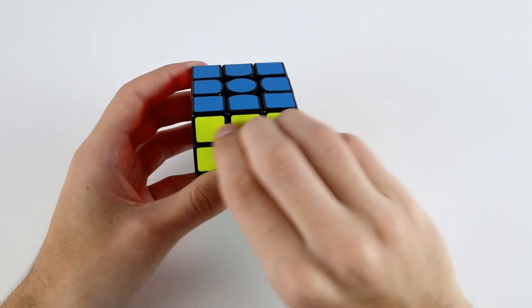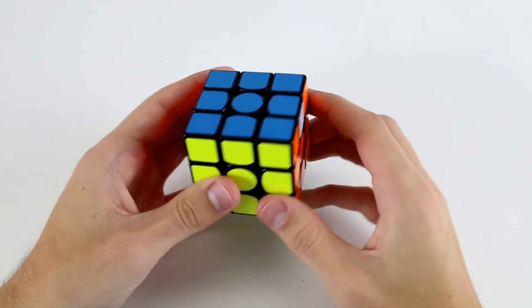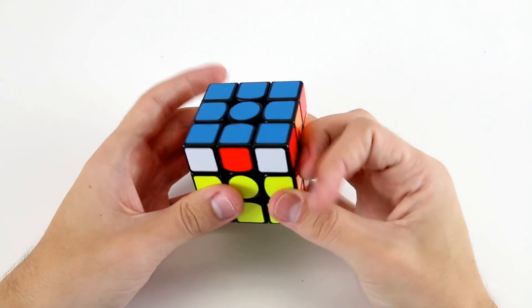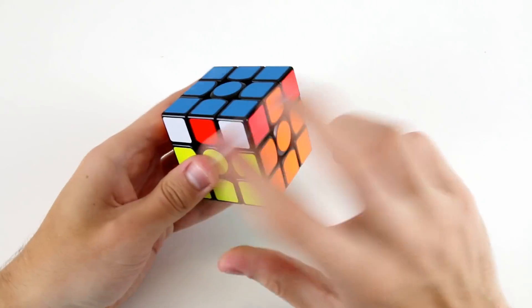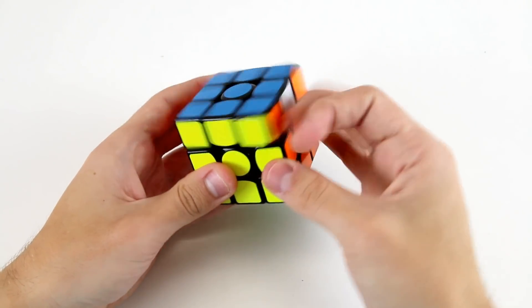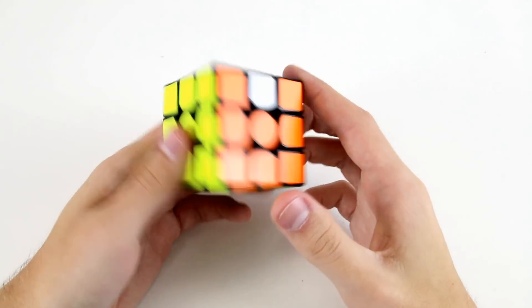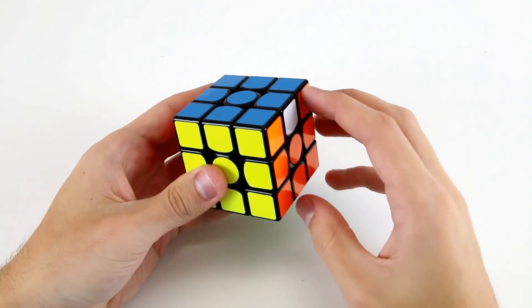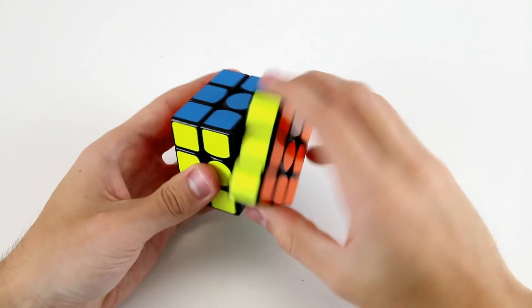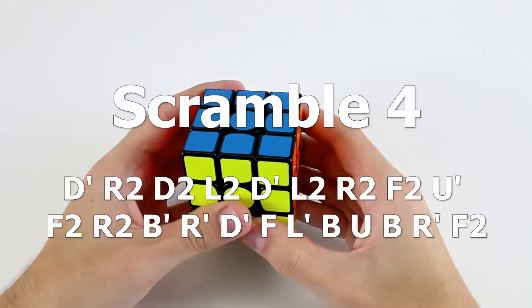So I'm going to do the U permutation with the block at the front here which is a different algorithm. If you only know one U permutation algorithm you might have to do the U2 then do the U permutation then U2 at the end but there's algorithms for multiple angles for most PLL cases. This is the U permutation with the bar at the front here which goes like that.